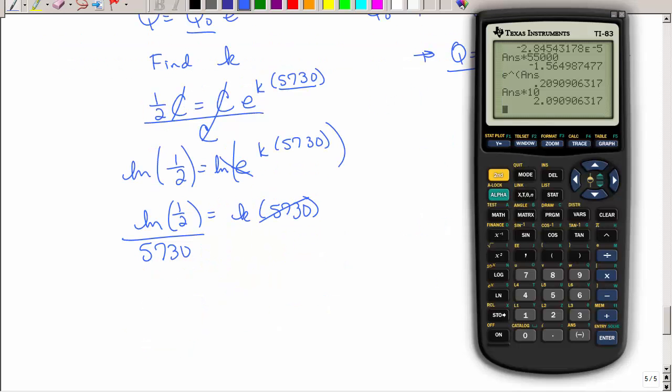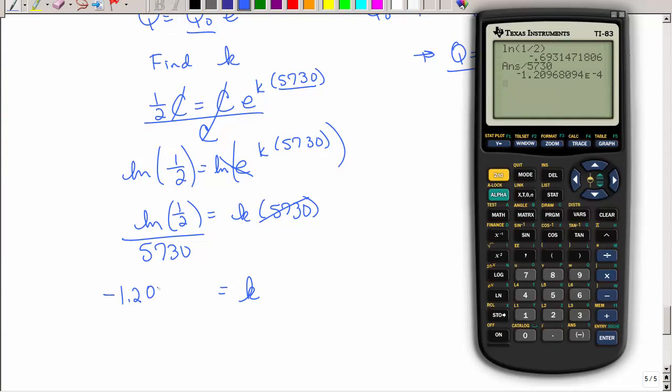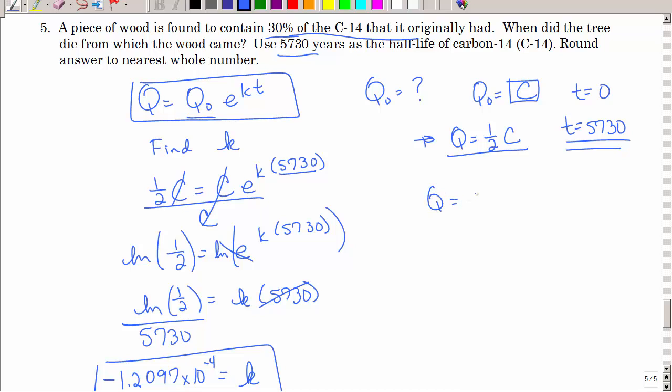So we're going to bring up our calculator. So we have the natural log of one divided by two. Again, because it's that half-life. Going to divide by 5,730. And we do get a negative value in that exponential notation again. So what is our model? Q equals, we're going to call that C for Q naught. E to the negative 1.2097 times 10 to the negative fourth times T. That's our model.